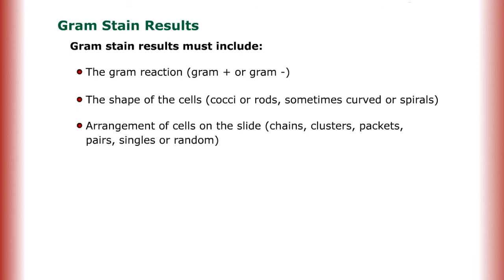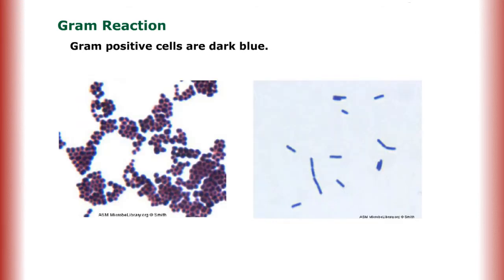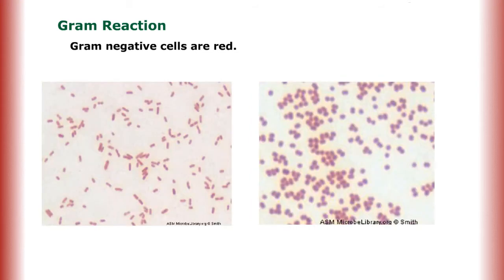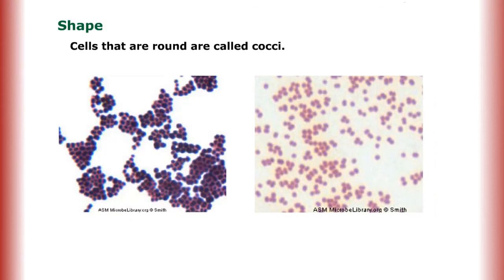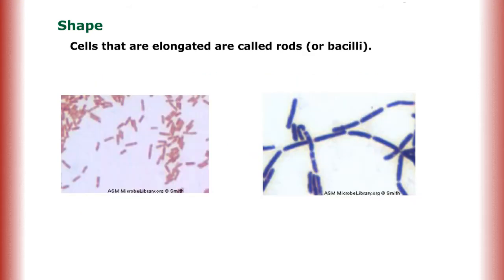Chains, clusters, packets, pairs, singles or random. Gram reaction: Gram-positive cells are dark blue. Gram-negative cells are red. Shape: Cells that are round are called cocci. Cells that are elongated are called rods or bacilli.